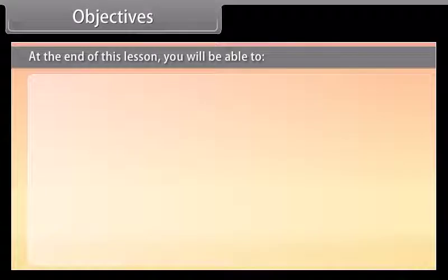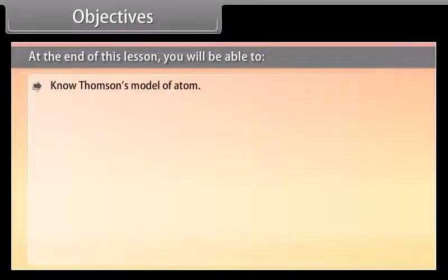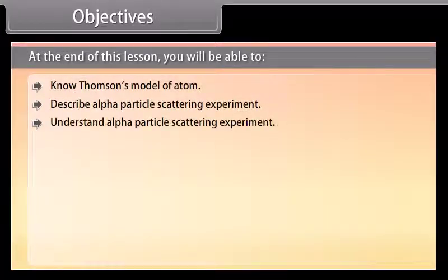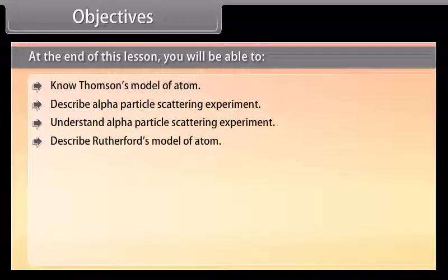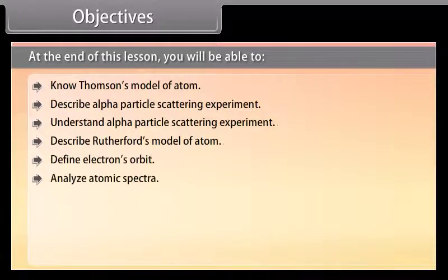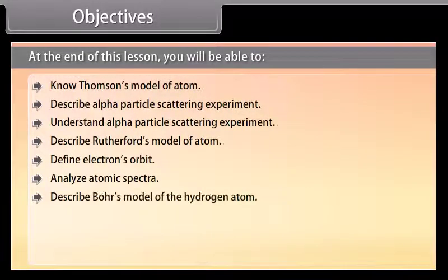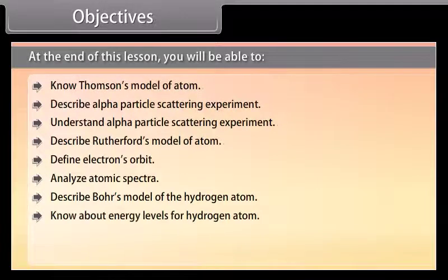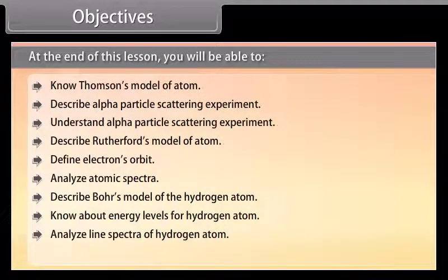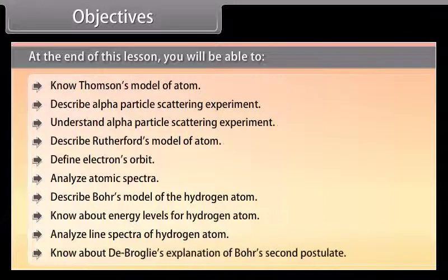At the end of this lesson, you'll be able to: know Thomson's model of atom; describe and understand the alpha particle scattering experiment; describe Rutherford's model of atom; define electron's orbit; analyze atomic spectra; describe Bohr's model of the hydrogen atom; know about energy levels of hydrogen atom; analyze line spectra of hydrogen atom; and know about de Broglie's explanation of Bohr's second postulate.